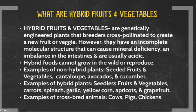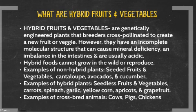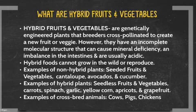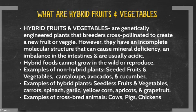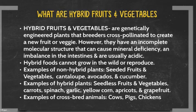Examples of non-hybrid plants include seeded fruits and vegetables such as cantaloupes, avocados, and cucumbers. Examples of hybrid plants include seedless fruits and vegetables, carrots, spinach, garlic, yellow corn, apricots, and grapefruit. And just for fun, some examples of cross-bred animals include cows, pigs, and chickens.